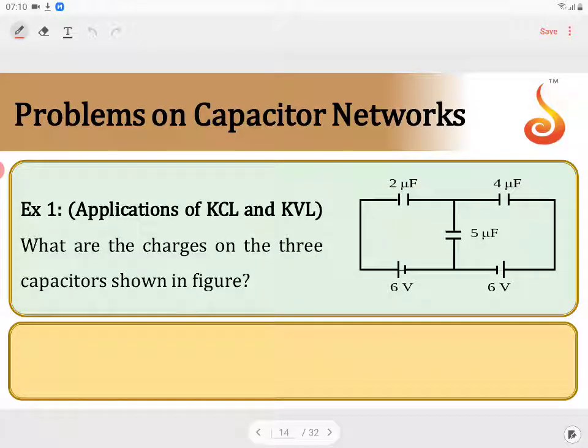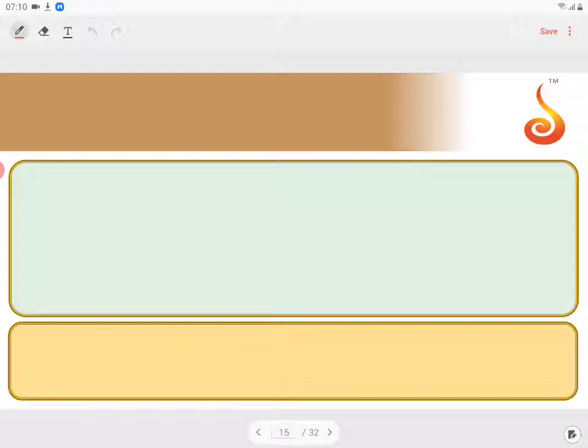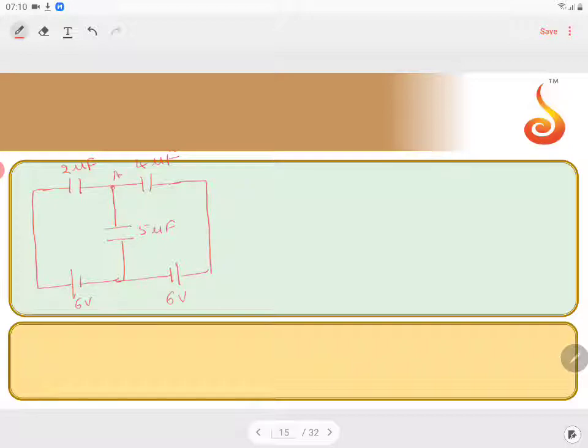So 2, 4 and 5 microfarad, and 6-volt and 6-volt. So here, 2 microfarad, 4 microfarad, this is 5 microfarad, this is 6-volt, this is 6-volt. Okay, so say this is point A, this is point B.